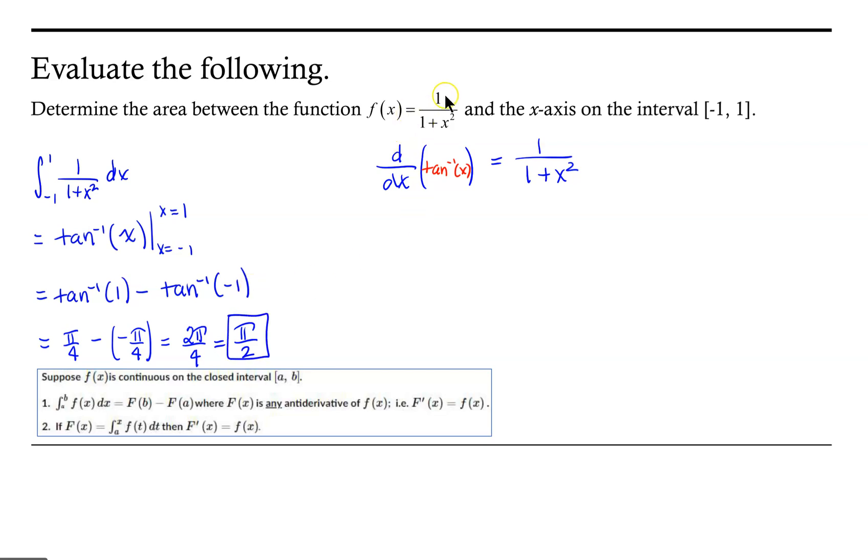So, the area between the function f of x equals 1 over 1 plus x squared and the x-axis on our interval from negative 1 to 1 is pi over 2.